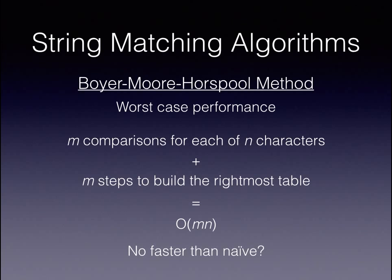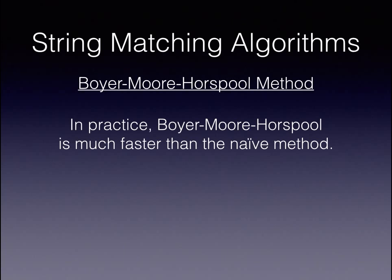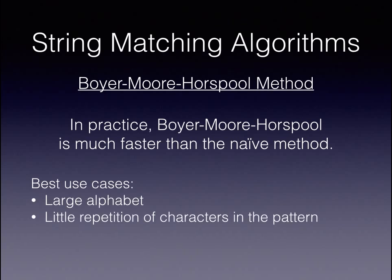This looks like it's no faster than the naive algorithm, which is true, but in practice the Boyer-Moore-Horspool algorithm is much faster than the naive method. It is most effective with large alphabets and when there is little repetition in the pattern, as both of these cases increase the chances of being able to skip large chunks of text.